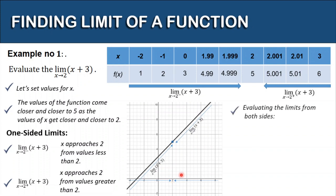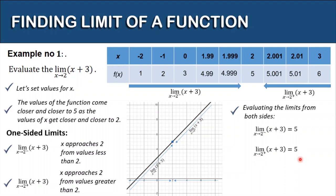Evaluating the limits from both sides: the limit of the function x plus 3 as x approaches 2 from the left is equal to 5. Also, the limit of the function x plus 3 as x approaches 2 from the right is equal to 5. Therefore, the limit of our function x plus 3 as x approaches 2 is 5.